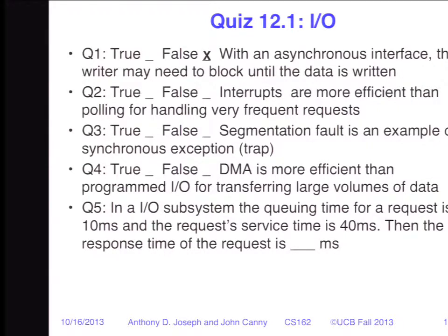Question two: interrupts are more efficient than polling for handling very frequent requests. That is indeed false. Interrupts are very good if we have something infrequent. Polling is what we want to use if we have something frequent, because we don't have the overhead of all the context switching that occurs with interrupts.